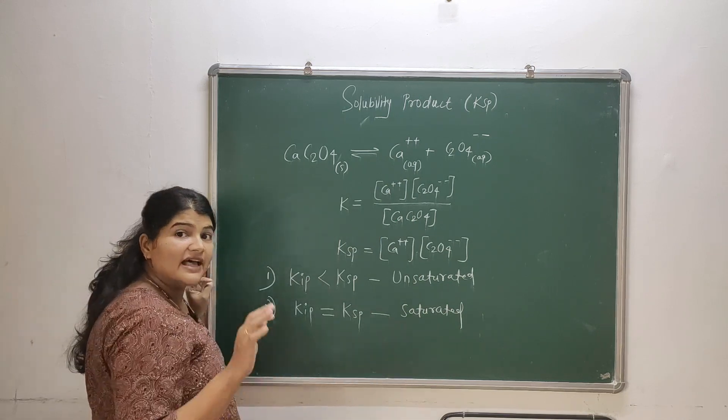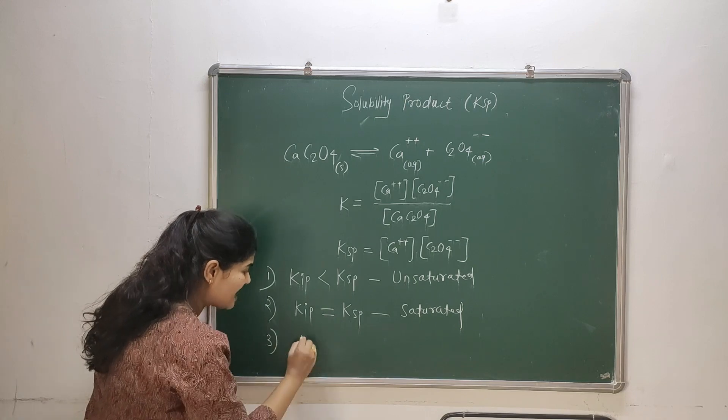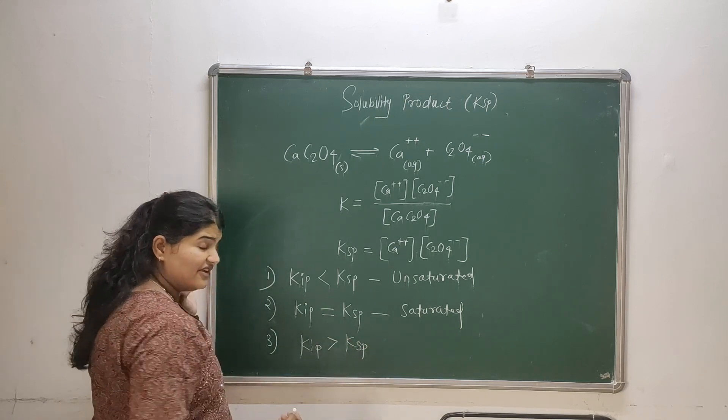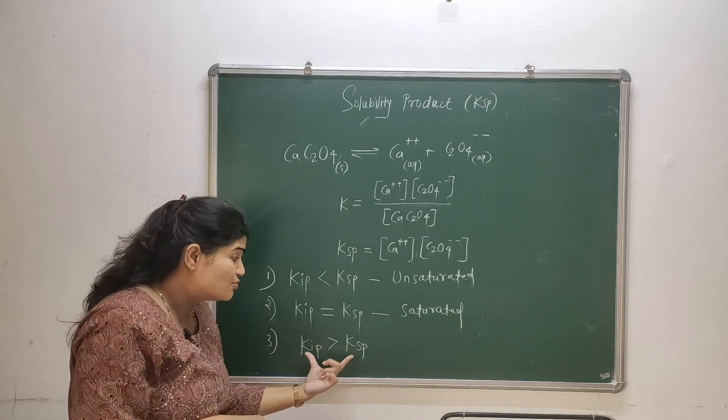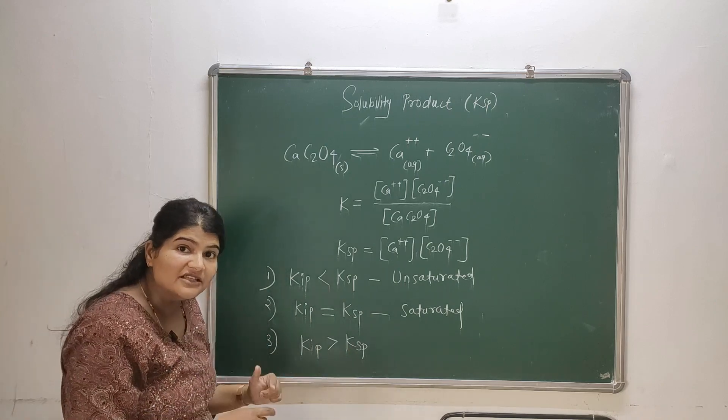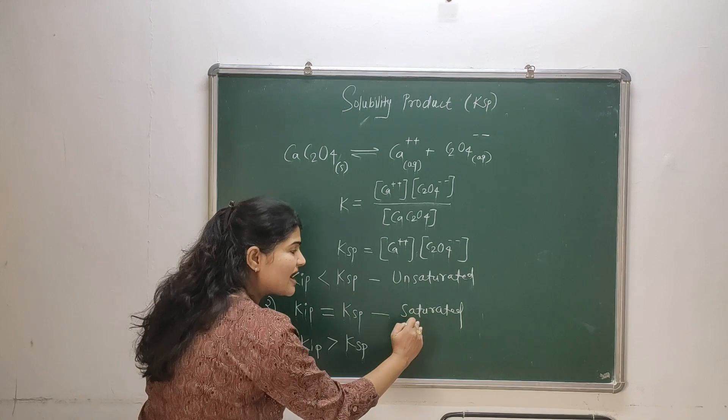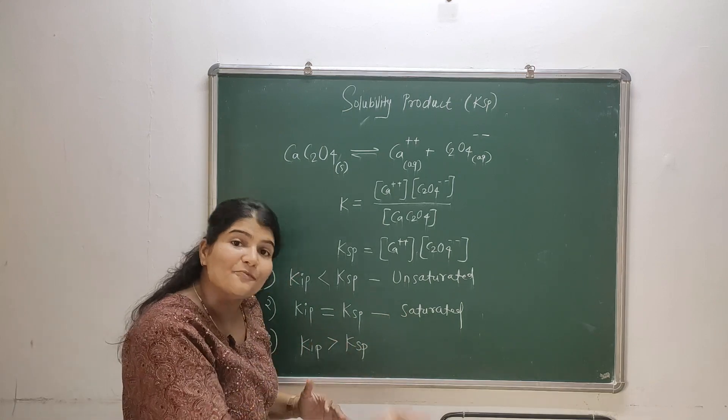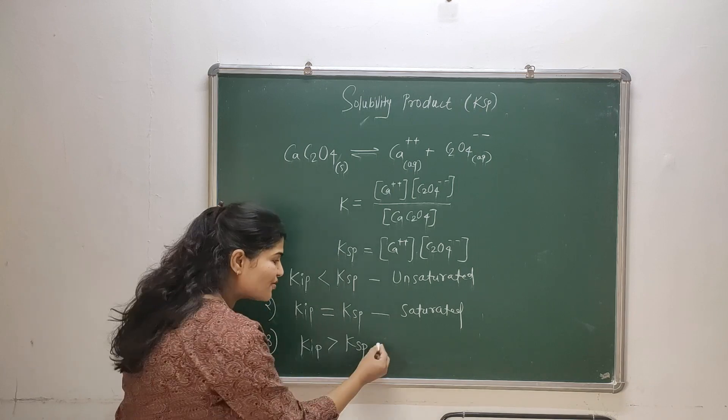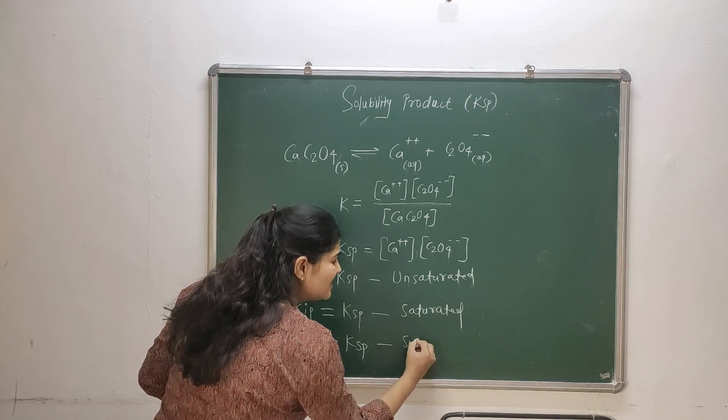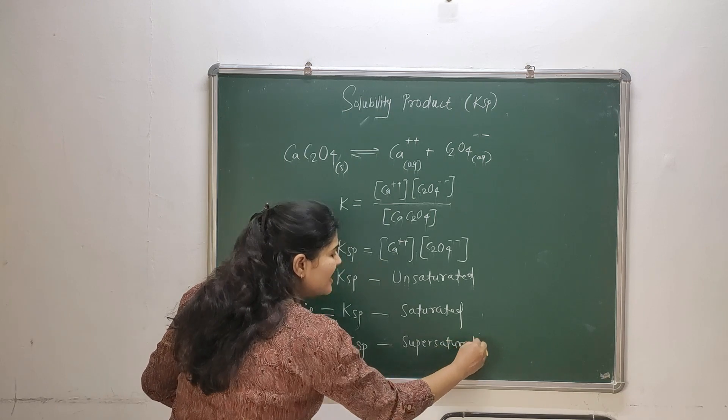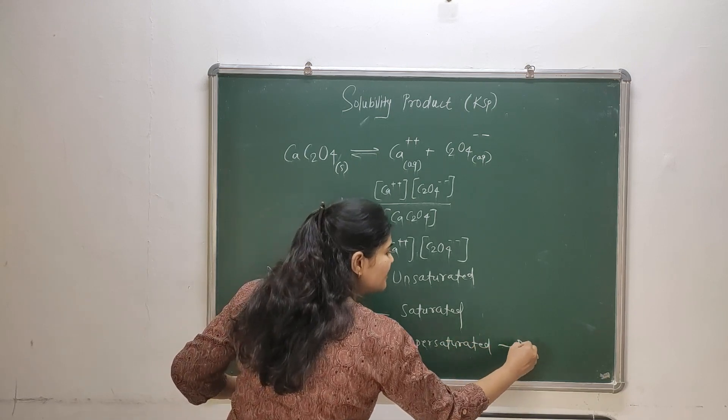Now if my Kip exceeds the solubility product, what will happen? If my Kip exceeds, if it is more than solubility product, it means the solution has passed the saturation phase. Now it has entered the super saturation phase and so the precipitation will begin. So the solution is super saturated and it will definitely lead to precipitation.